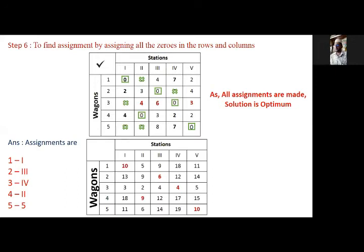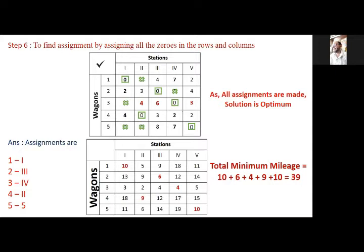The question also asked for the minimum mileage. For that, check the original cost matrix. As assigned: 1 to 1 has cost 10; then 6, 4, 9, and 10. This gives a minimum mileage of 39. No other assignment option will give an answer equal to or less than 39. This completes the solution.